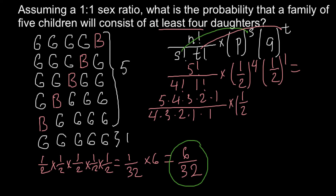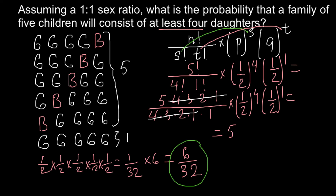Multiplied by one half raised to 4, multiplied by one half raised to 1. As you see, we have the same numbers on top and below, so we can cross them out. What we are left with is just 5 divided by 1, which equals 5. Anything divided by 1 is the same number. And here we have one half raised to 4 — that means one half multiplied by itself four times — multiplied by one half raised to 1, so just by one half. This gives us 5 multiplied by 1 over 32, which equals 5 over 32.